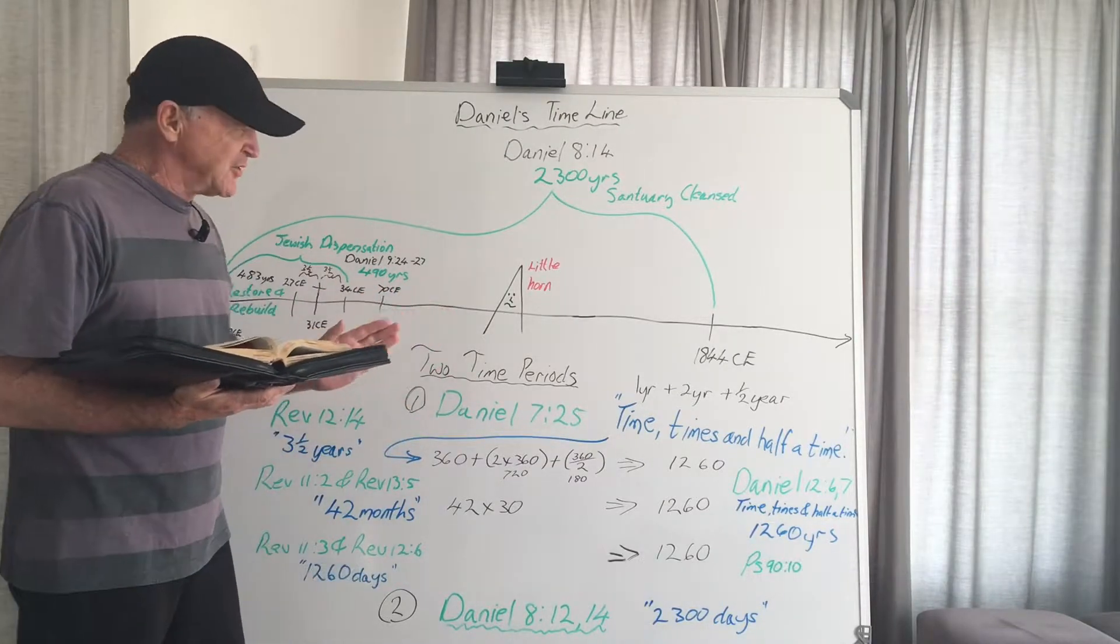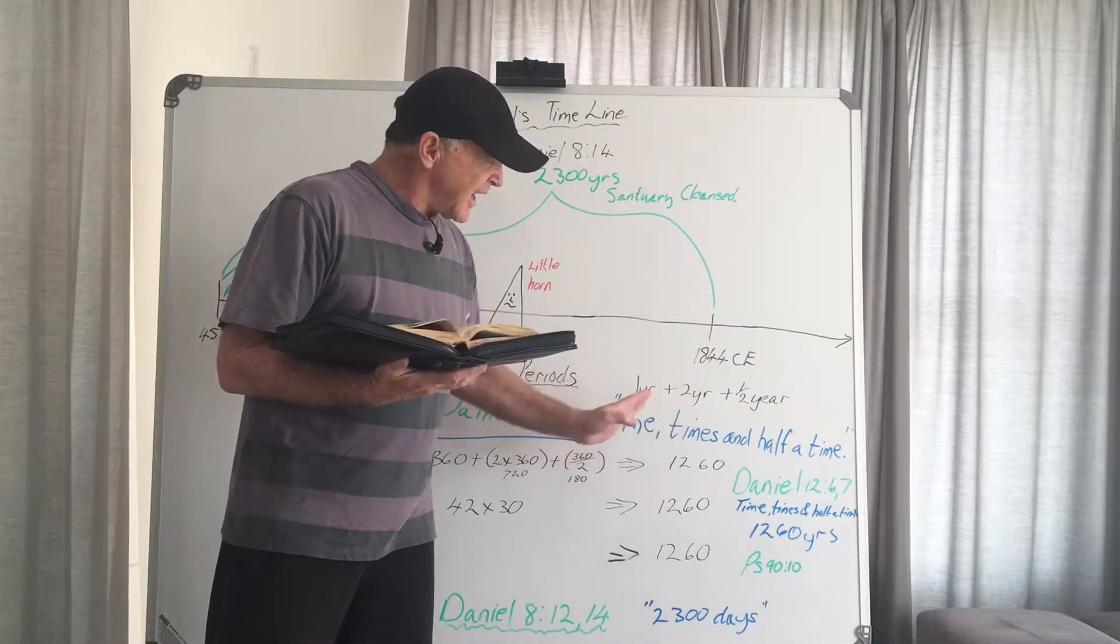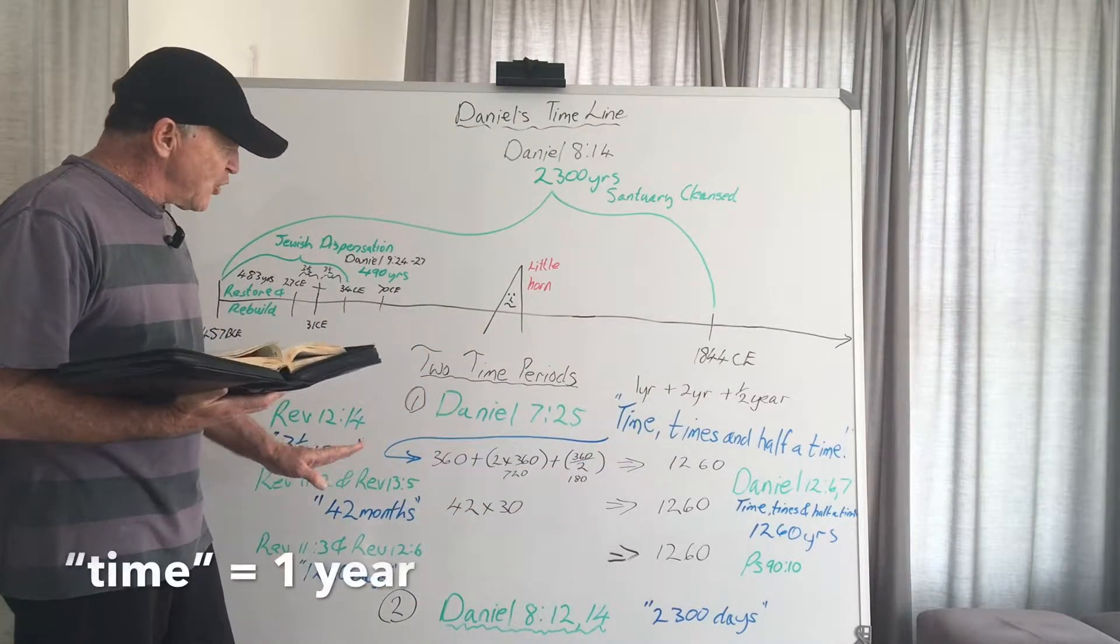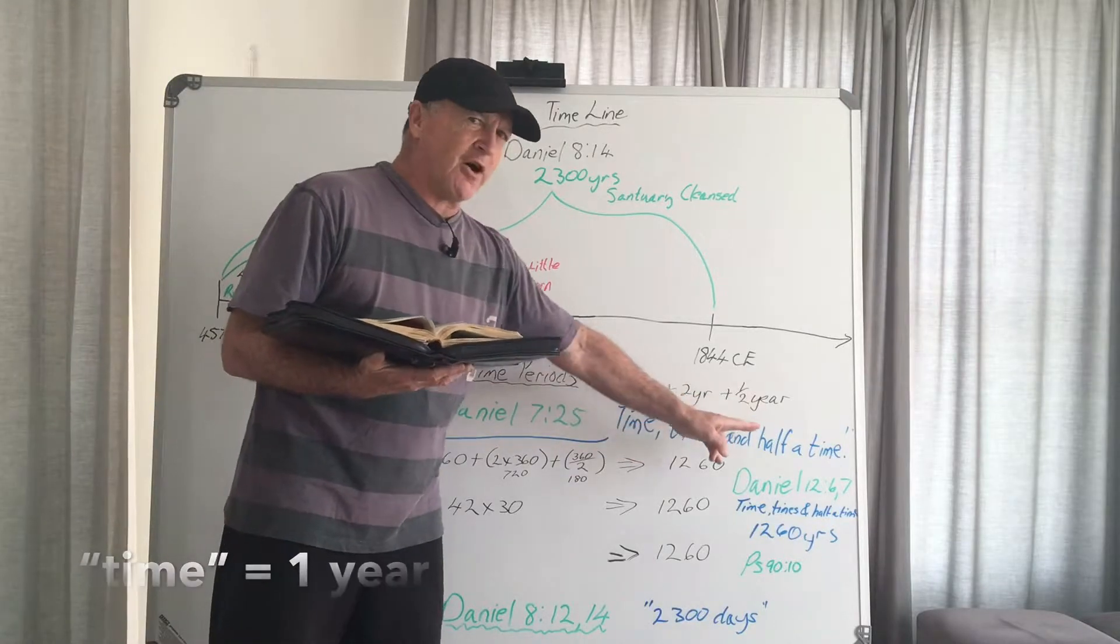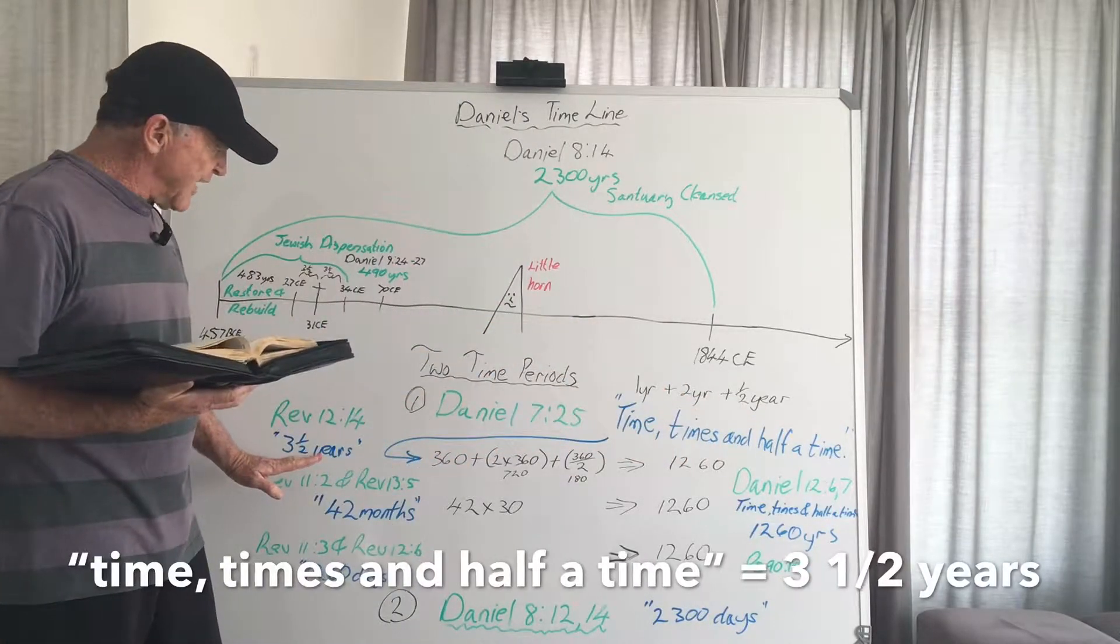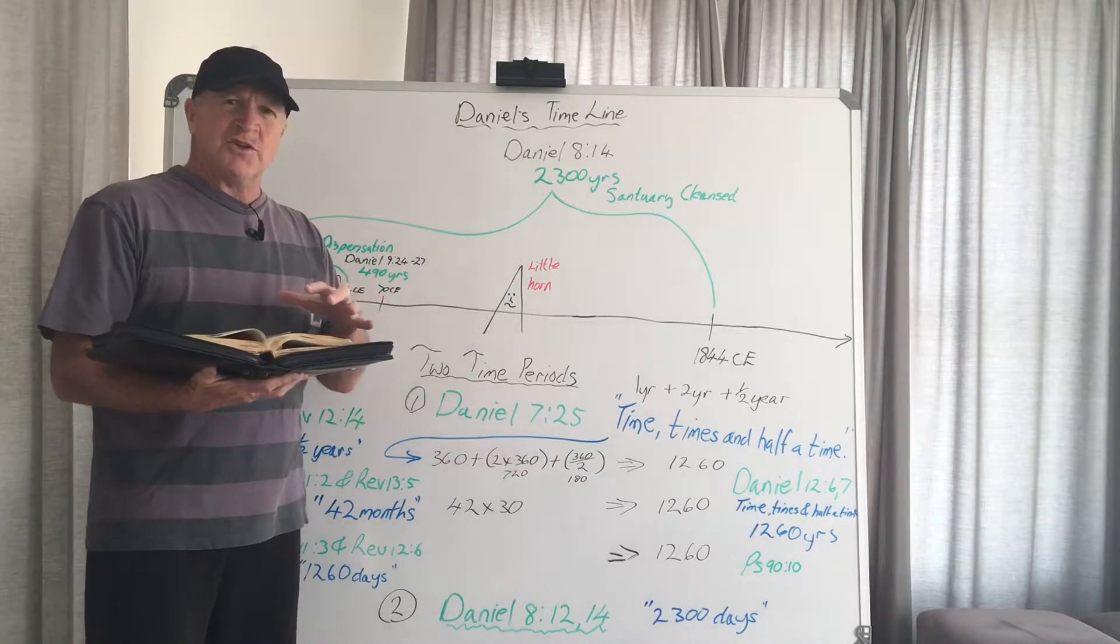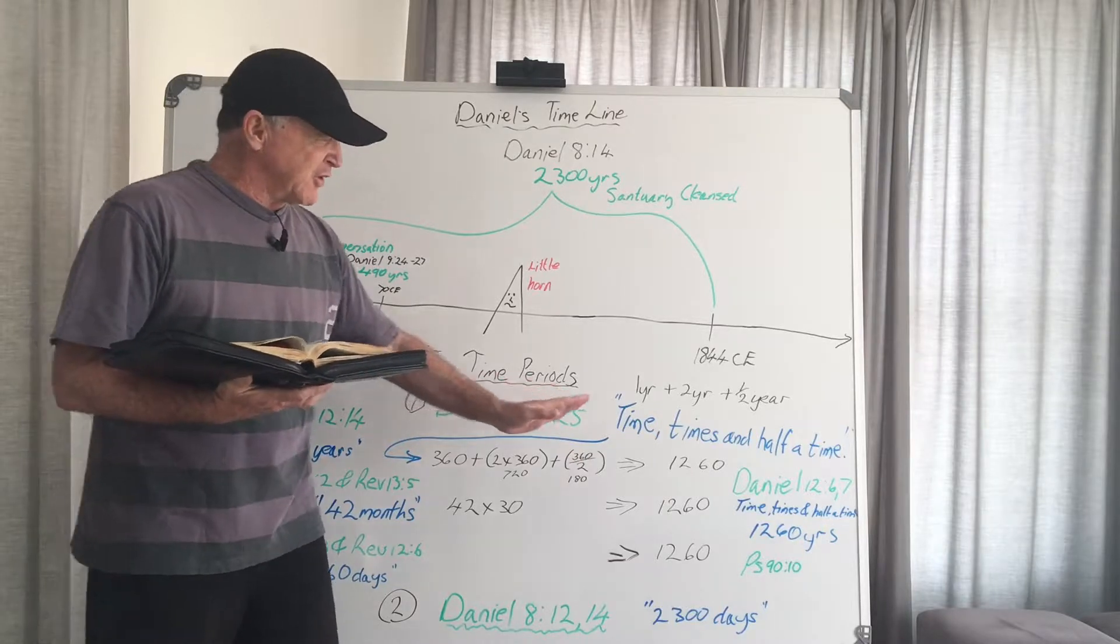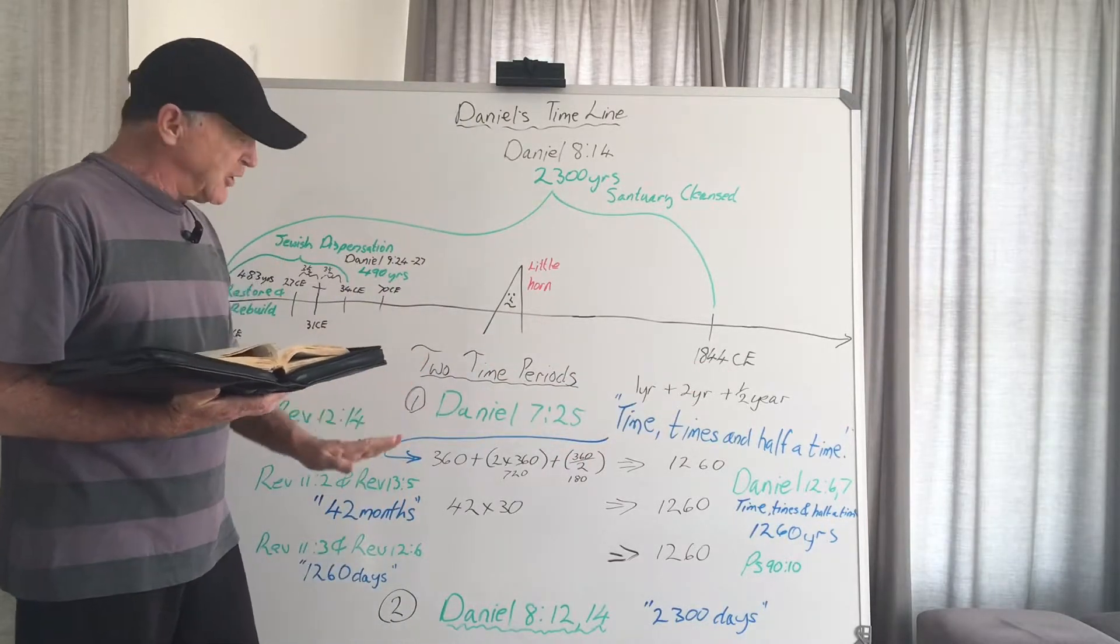Now today I would like to show you when we talk about time, times and a half a time, we are actually talking about one year plus two years plus a half a year, which gives us three and a half years. Now in some translations they actually talk about three and a half years whenever you read about time, times and a half a time. But let's have a look at this.